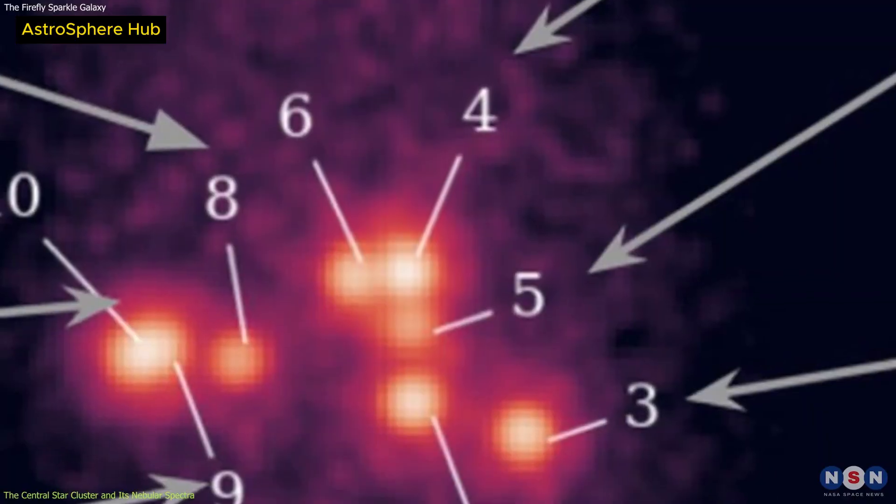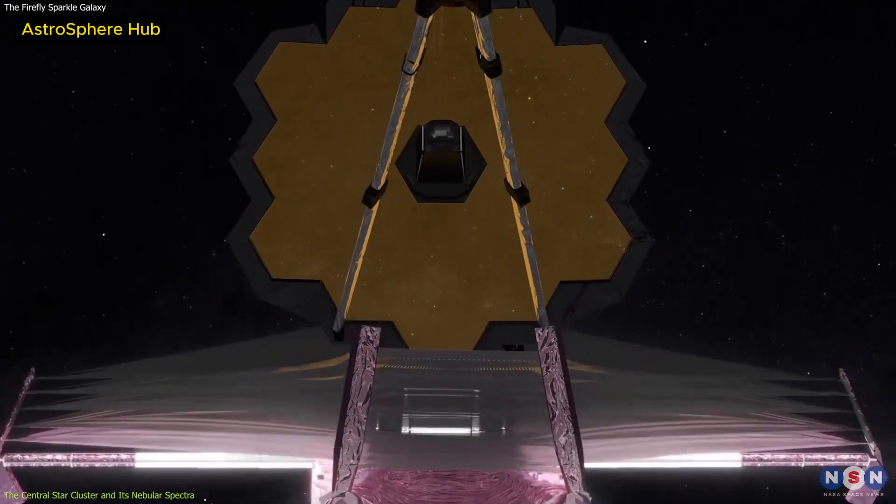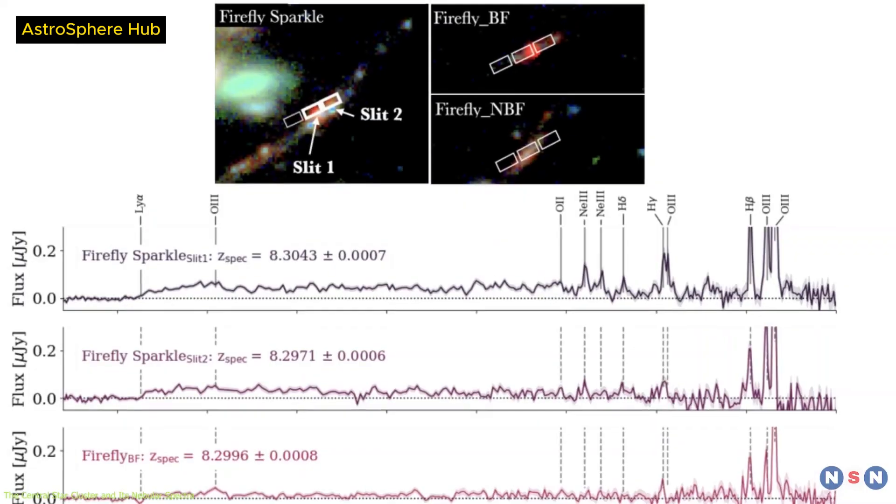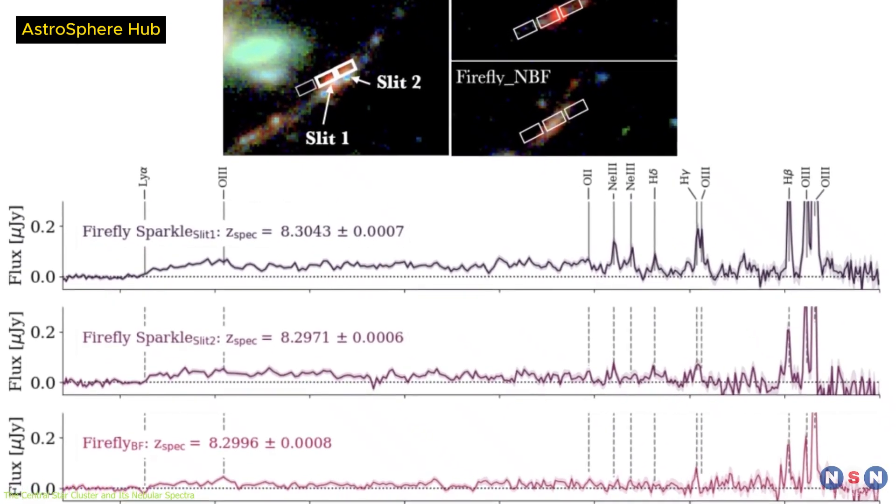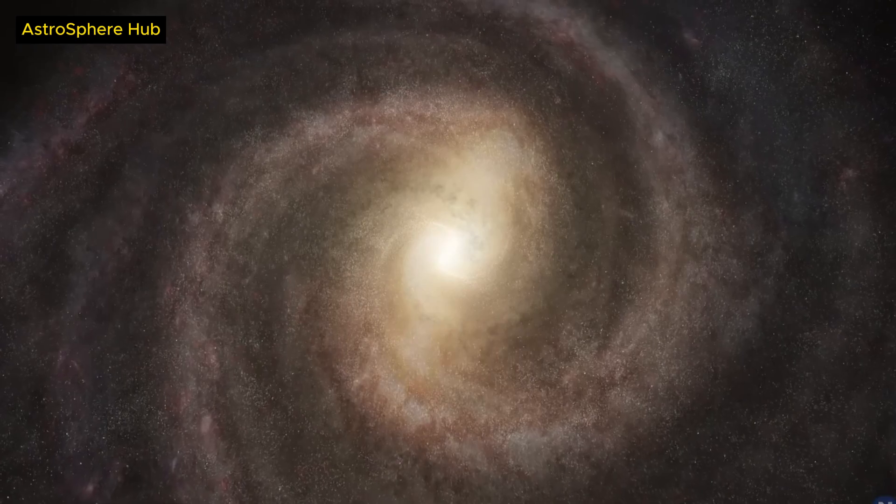The James Webb Space Telescope has observed a galaxy that is about 13 billion light-years away, and it looks remarkably similar to a young Milky Way.